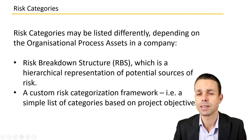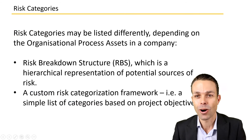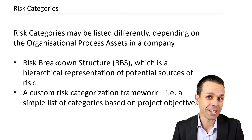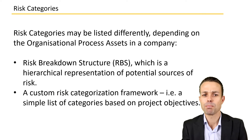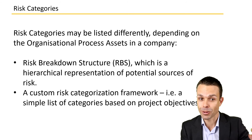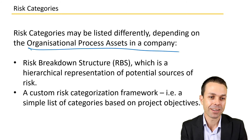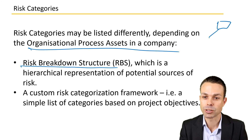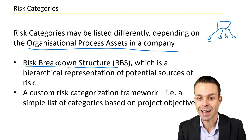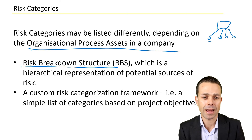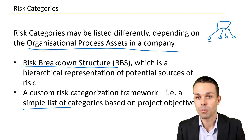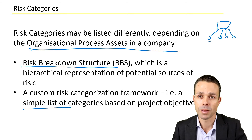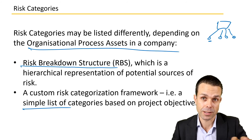This also comes down to the organizational process assets — the OPAs of the organization you're working in. Perhaps they already have a list available, but risk categories might be used differently depending on the OPAs in a company. One of the ways is a risk breakdown structure, where you start with a large source and delve deeper into that source to find the categories. A company might also have a simple list of categories based on project objectives that you can pick and choose from to prompt you to see things that might come about.